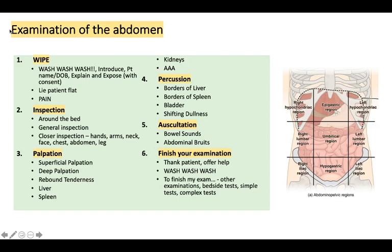We're going to look at the abdominal examination. I'm sure in years one and two, and throughout year three, you already know how to do a basic abdominal examination. The abdomen is divided into nine quadrants: the right upper quadrant, the left upper quadrant, the right lumbar region, the left lumbar region, the right and left iliac regions, the epigastric region, the umbilical region, and the hypogastric region. When you examine and report findings, you should always refer to these quadrants when you present your case.